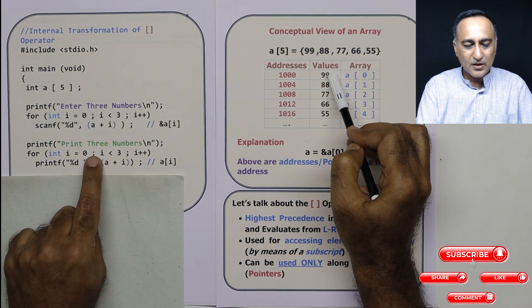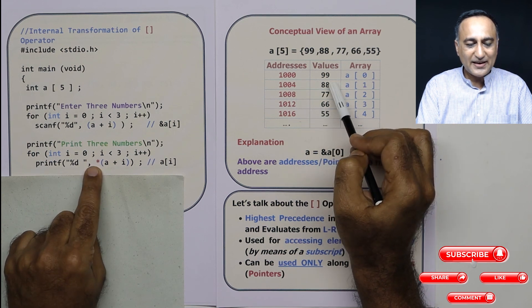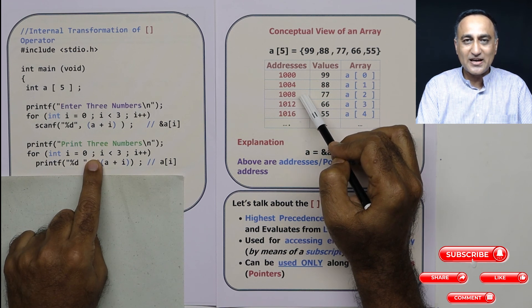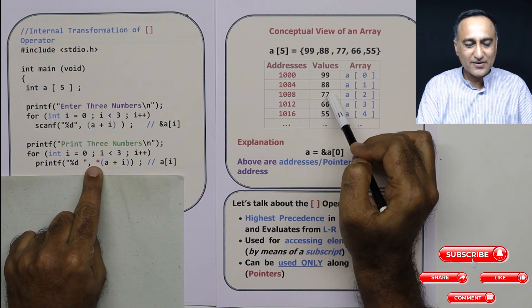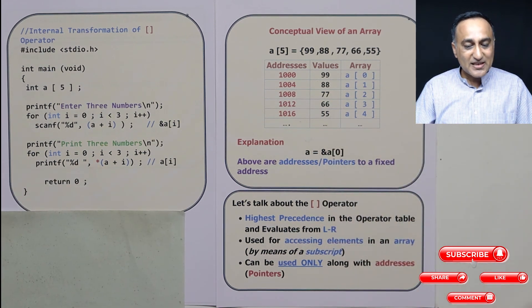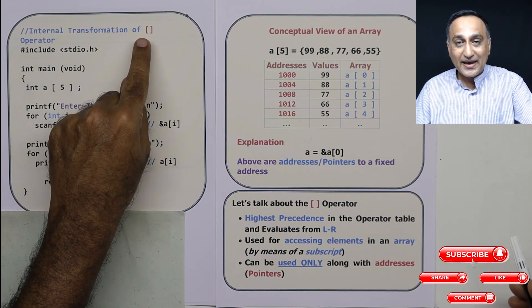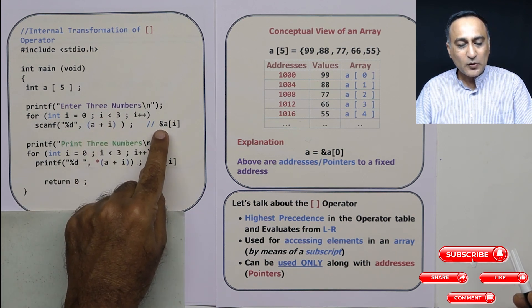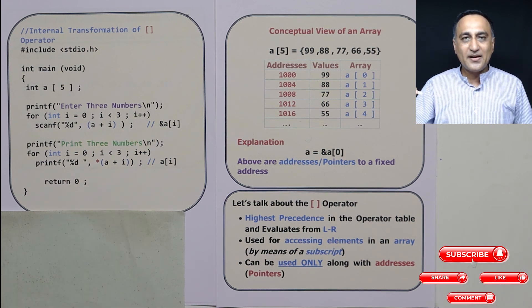I becomes 1. 1000 plus 1 into 4 is 1004. Value at address 1004 is 88. I becomes 2. 1000 plus 2 into 4 is 1008. Star value at address 1008 is 77. So I hope this has helped you understand how this particular square bracket array subscript operator is transformed into A plus I while reading into an array and how it is a star A plus I when printing numbers from an array.